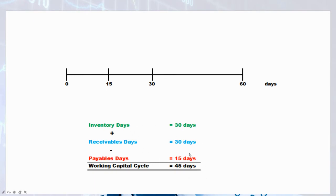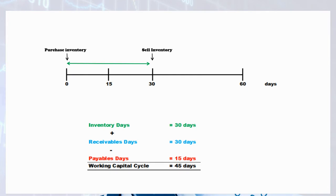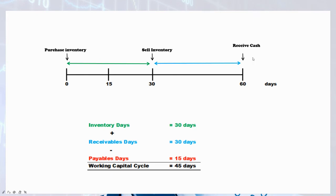To understand why the formula works, let's start with inventory days of 30 days. This means every time the company receives inventory, it holds it for an average of 30 days before selling it. However, at the point of sale, the company does not yet receive cash — because of receivable days. Since this company sells on credit, it takes another average 30 days after the inventory is sold to collect the money back from its customers. That is the point where the company actually receives the cash.